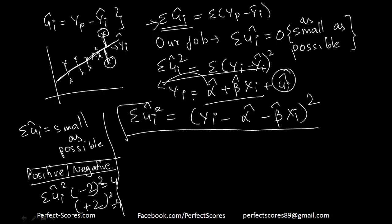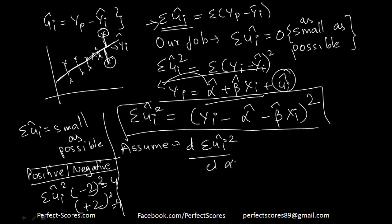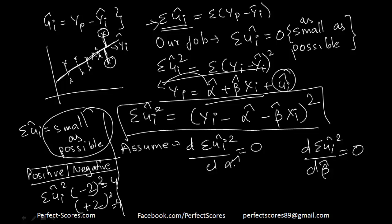One key assumption here is that in the long run, the errors cancel out. This means the differentiation of the sum of squared errors with respect to alpha-hat is equal to zero, and the differentiation with respect to beta-hat is also equal to zero. This condition keeps the errors as small as possible, and in the next video we will further calculate from here.